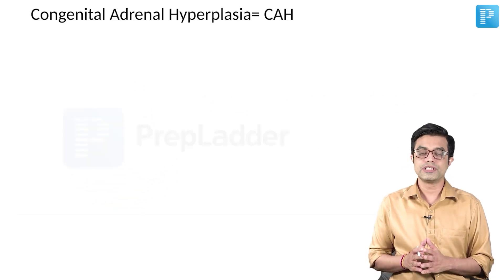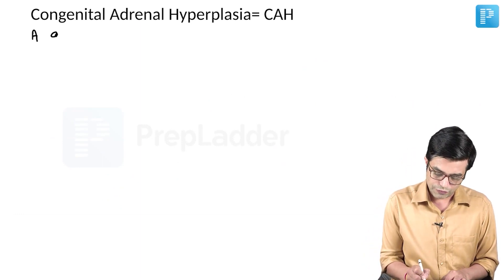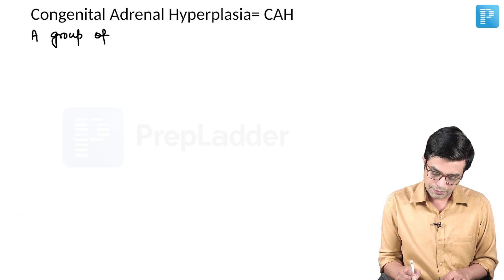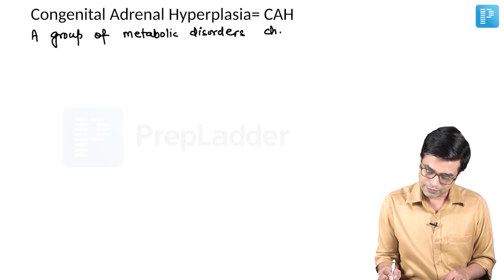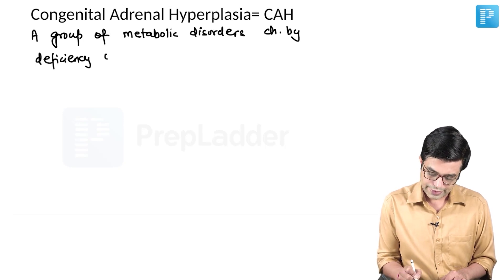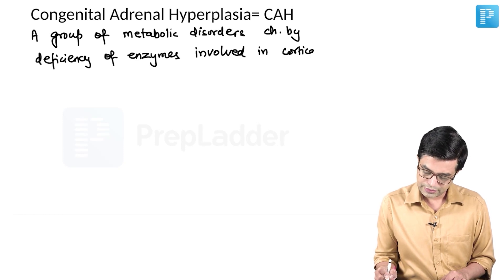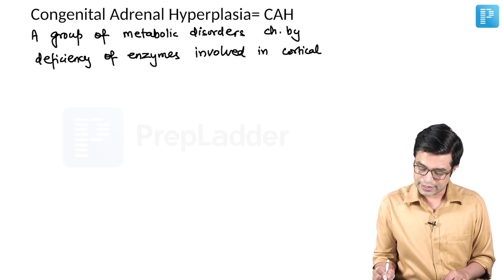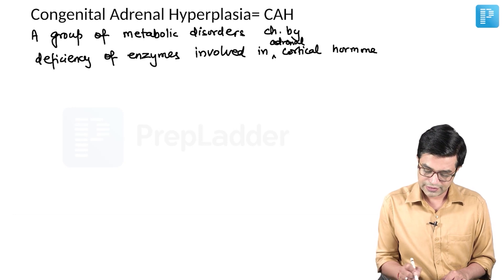Let us begin with the proper topic: congenital adrenal hyperplasia. What exactly is this? It is a group of metabolic disorders — an inborn error of metabolism — characterized by deficiency of enzymes involved in adrenocortical hormone synthesis.